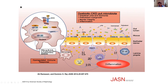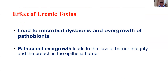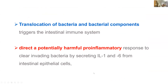The overall effect in CKD gut microbiota is increased inflammation, which again perpetuates loose bowel loops. Whatever is in the lumen of the intestine tries to come into the lamina propria, so there is increased permeability. In dysbiotic CKD gut microbiota, instead of IgA, you see more IgG. The immune system is dysregulated, leading to an increased inflammatory response. The effect of uremic toxins leads to microbial dysbiosis and overgrowth of pathobionts. Overgrowth leads to loss of barrier integrity and breaches in the epithelial layer, triggering bacterial translocation and components that activate the intestinal immune system, directing a potentially harmful inflammatory response — secreting IL-1 and IL-6 from intestinal epithelial cells.